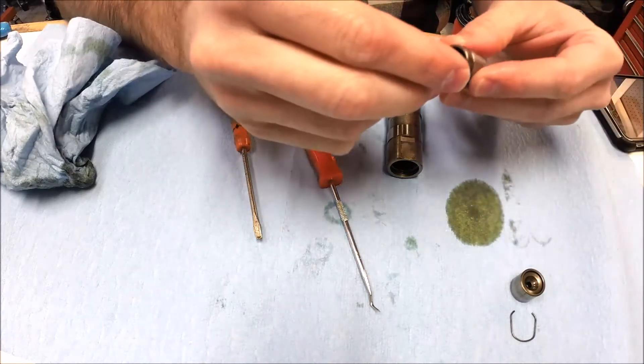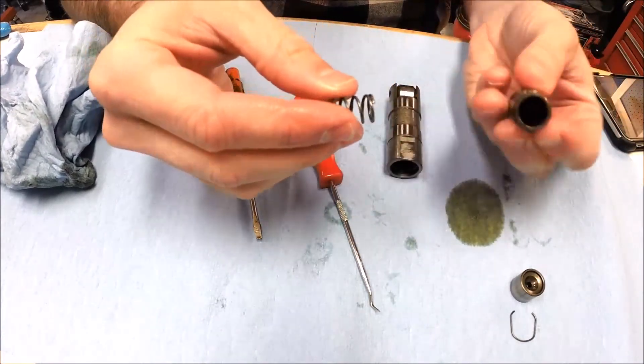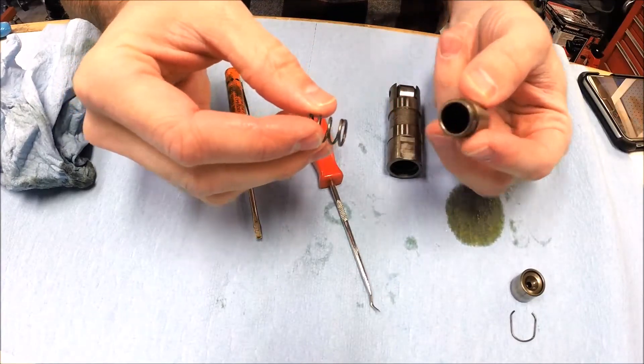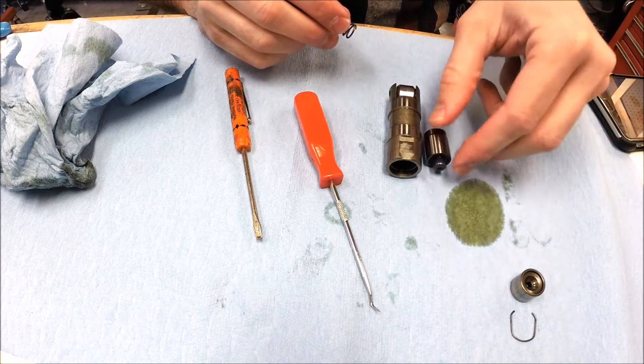So it doesn't really matter if you reuse the spring or not. So normally the spring sits on this side. We're going to flip this component over and put it in this way. We're going to put it in upside down.